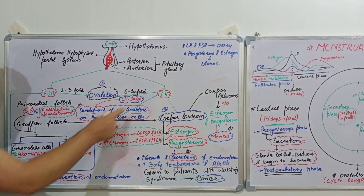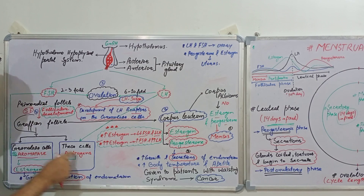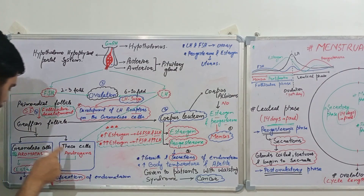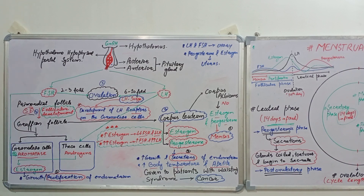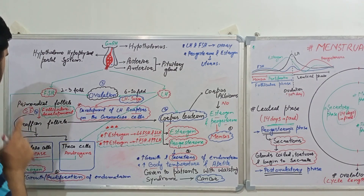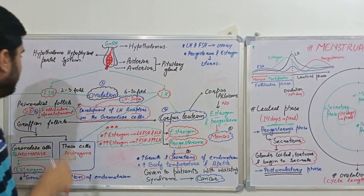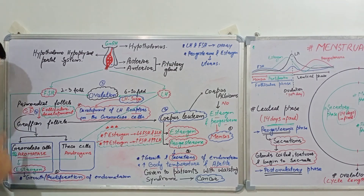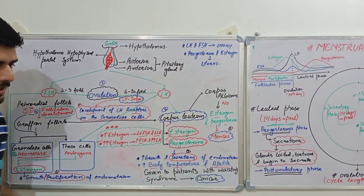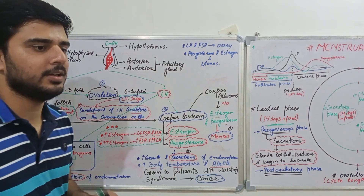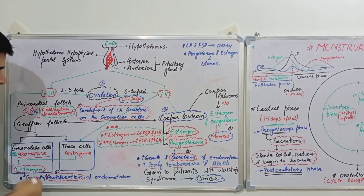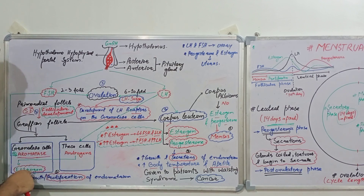After stimulation by luteinizing hormone, theca cells form androgens. These androgens travel into the granulosa cells, where an important enzyme known as aromatase is present. Aromatase is activated by follicle-stimulating hormone — as we also discussed in the male reproductive system. This aromatase converts androgens into estrogens, just as in males testosterone is converted into estradiol.